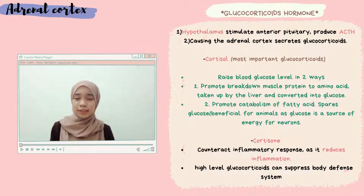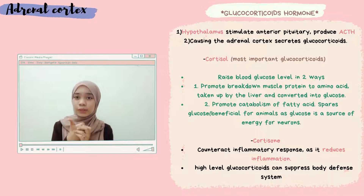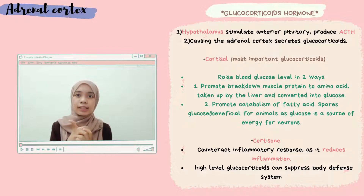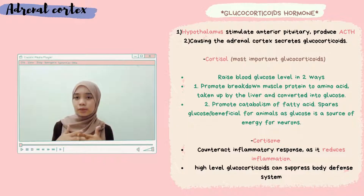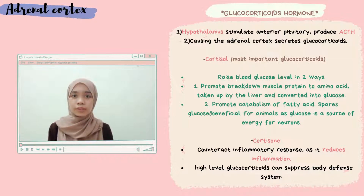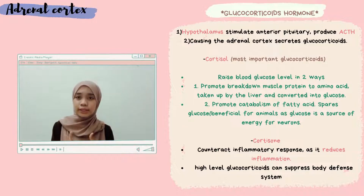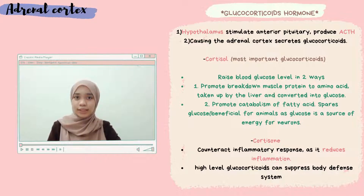The adrenal cortex secretes glucocorticoids. The hypothalamus stimulates the anterior pituitary to produce ACTH, which causes the adrenal cortex to secrete glucocorticoids. Cortisol, the most important glucocorticoid, raises blood glucose in two ways: first, by promoting the breakdown of muscle protein into amino acids, which are taken up by the liver and converted into glucose; and second, by promoting catabolism of fatty acids to spare glucose.